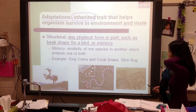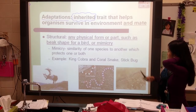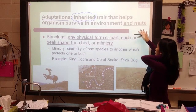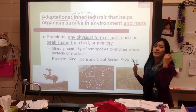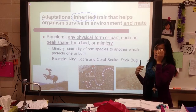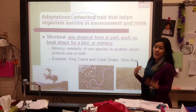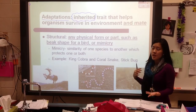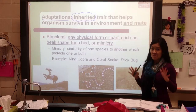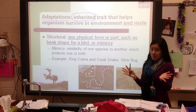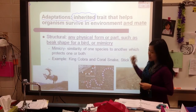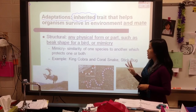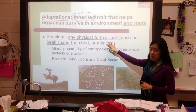The main thing with adaptations is that you must survive your environment and attract mates. In natural selection, the important thing is that you're able to pass on your genes — because if you don't pass on your genes, it doesn't really matter what you did. When we look at adaptations, there are three different kinds. The first is structural, which is something physical on your body.